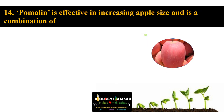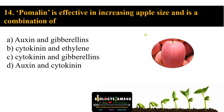Question number fourteen: Pomelin is effective in increasing apple size and is a combination of option A auxin and gibberellin, option B cytokinin and ethylene, option C cytokinin and gibberellin, option D auxin and cytokinin. The answer is option C — cytokinin and gibberellin.